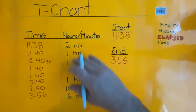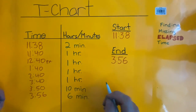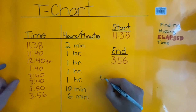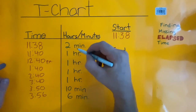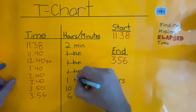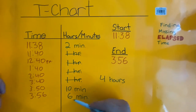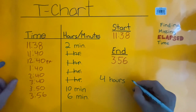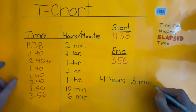All we have to do is go through and add all of these up. I always start with the biggest, which will be our hours. So we have 1, 2, 3, 4 hours. One thing I like to do is cross them out so I know that I've already added them. And then we have our minutes left: 2 minutes, 10 minutes, and 6 minutes. I know that 10 minutes and 6 minutes together gives me 16 minutes, and adding 2 more is 18 minutes. So our elapsed time is 4 hours, 18 minutes.